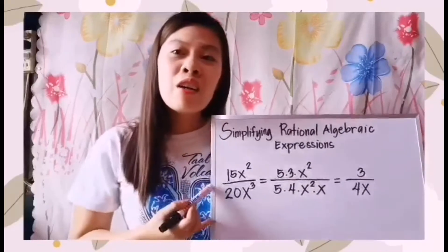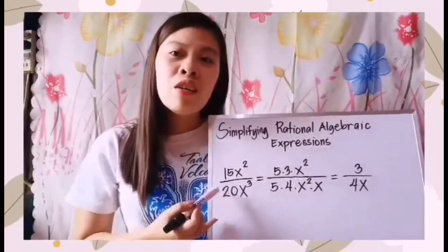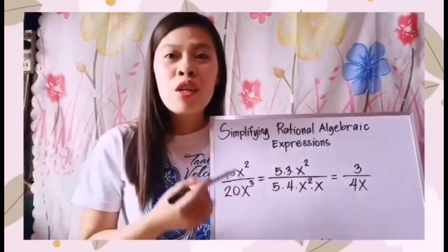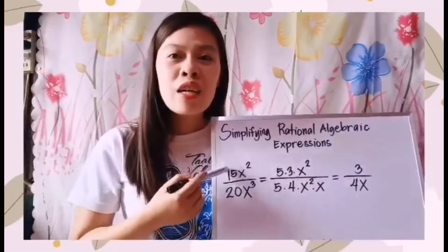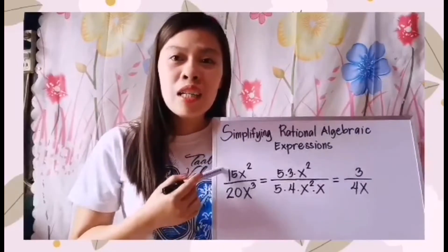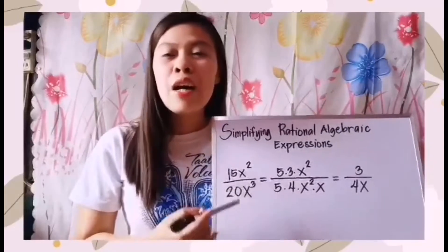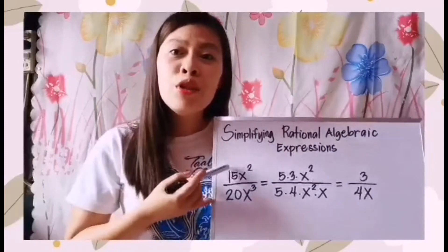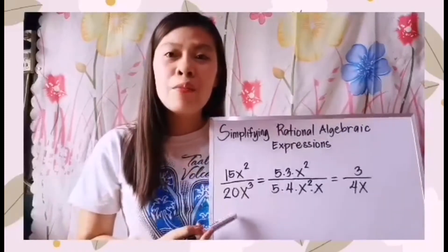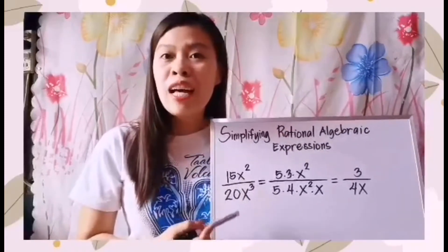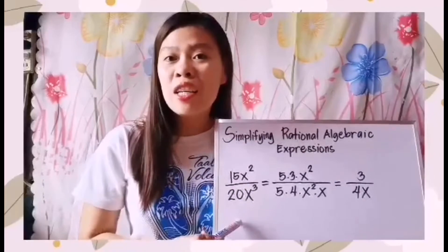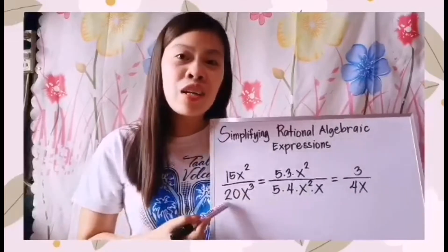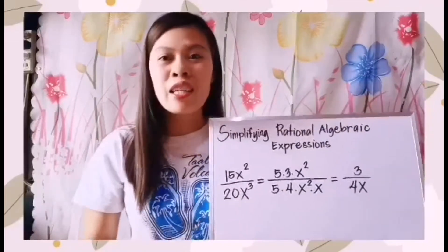We have here 15x squared over 20x cubed. As we can see, we have a polynomial divided by a polynomial — specifically, a monomial divided by a monomial. Now let us try to simplify this rational algebraic expression.